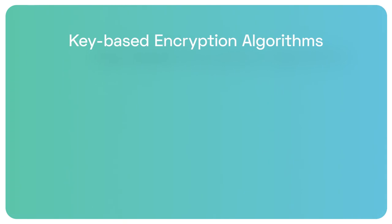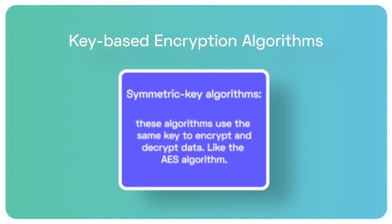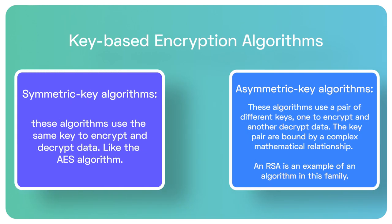There are two families of key-based encryption algorithms. The symmetric key algorithms use the same key to encrypt and decrypt data — like the AES algorithm. And the asymmetric algorithms use a pair of different keys: one to encrypt and another to decrypt data. The key pairs are bound by a complex mathematical relationship — RSA, for example, is an algorithm of this family. Like pure encoding, encryption is a reversible process as well, although just for authorized people. Authorized people are the ones in possession of a decryption key. The challenge is to make data decryption without the key as hard as possible, achieved by applying complex mathematical relationships between keys, keeping them secret, and changing them frequently.